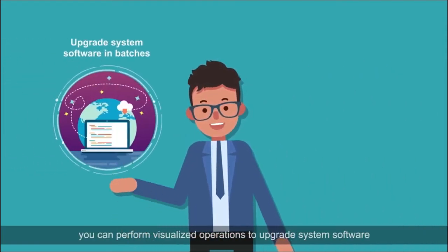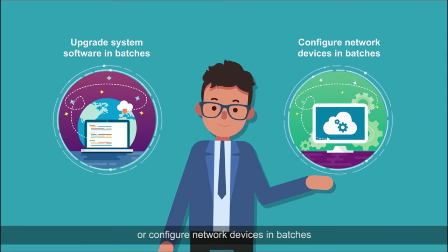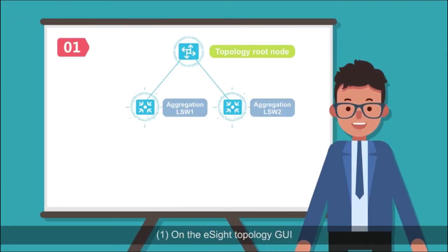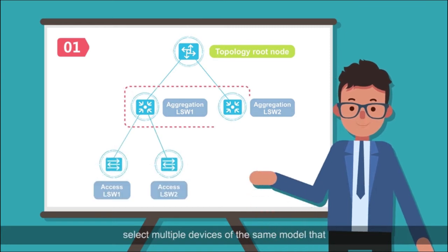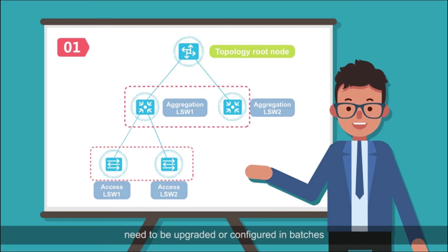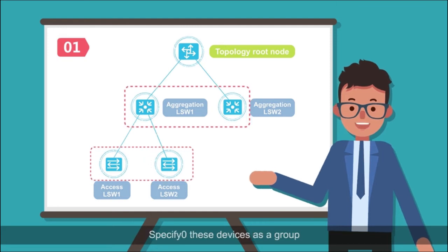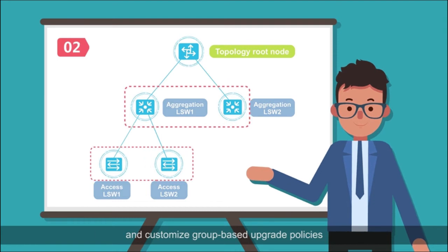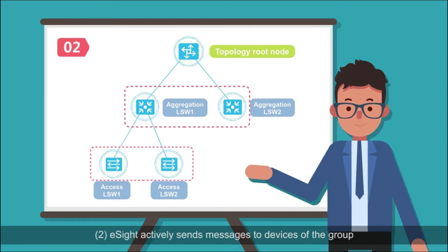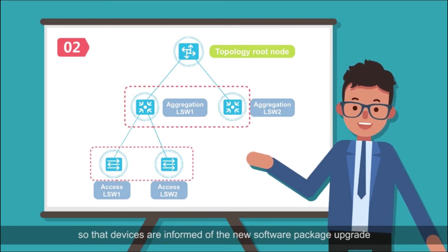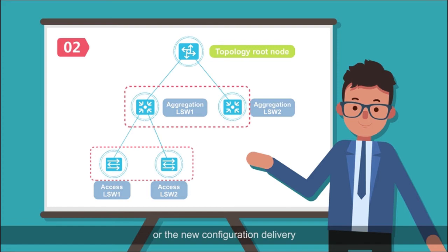At the O&M phase, you can perform visualized operations to upgrade system software or configure network devices in batches. On the eSight Topology GUI, select multiple devices of the same model that need to be upgraded or configured in batches, specify them as a group, and customize group-based upgrade policies. eSight actively sends messages to devices of the group so that devices are informed of the new software package upgrade or the new configuration delivery.